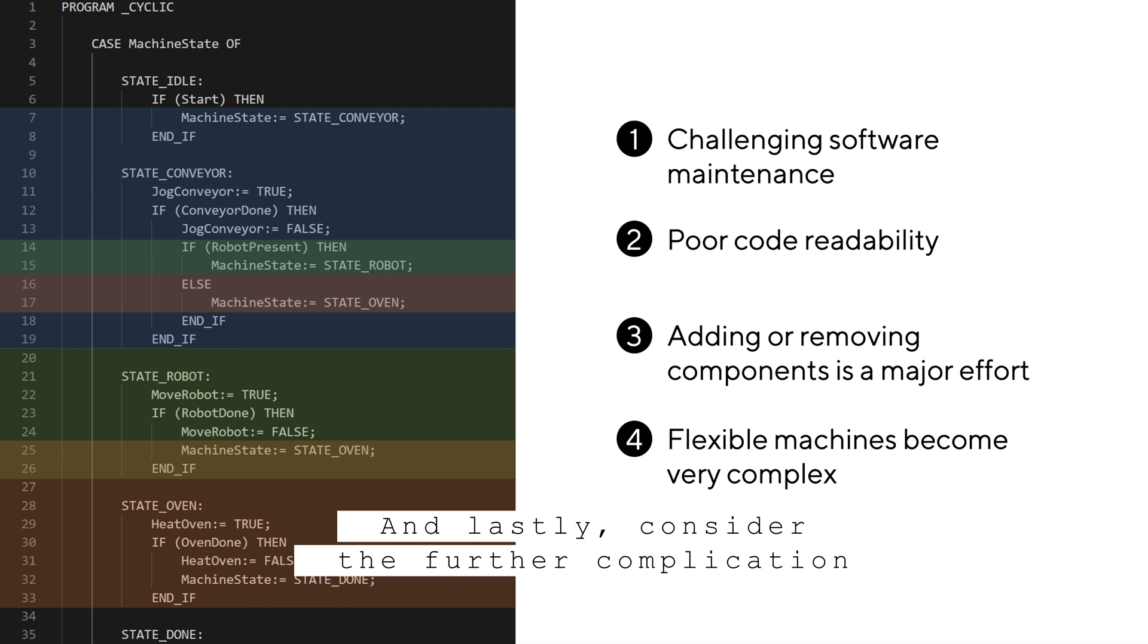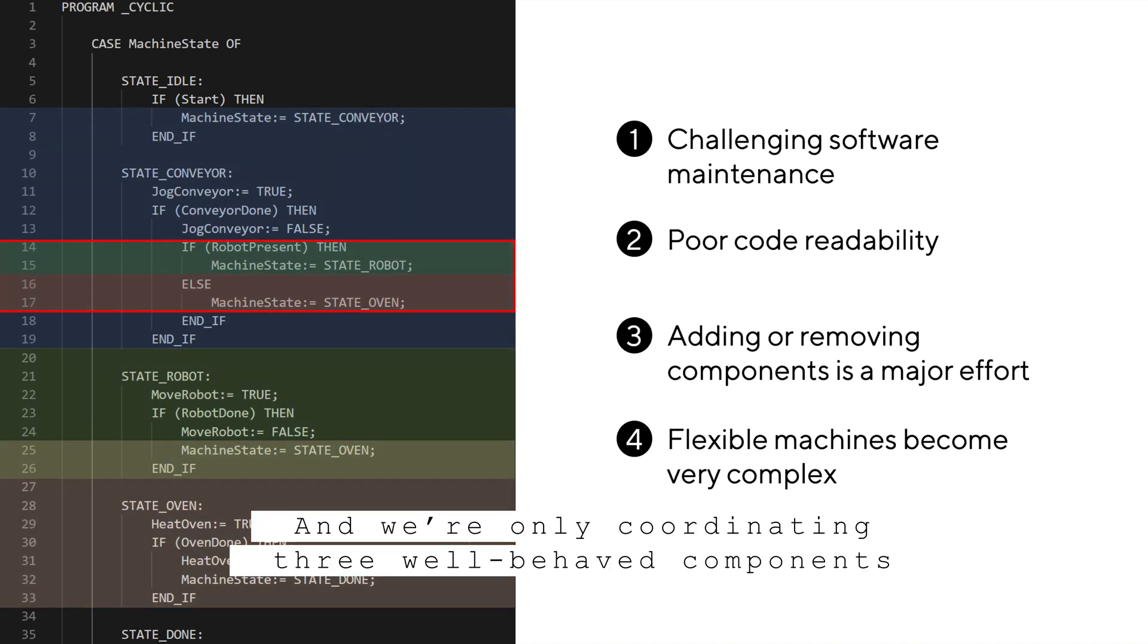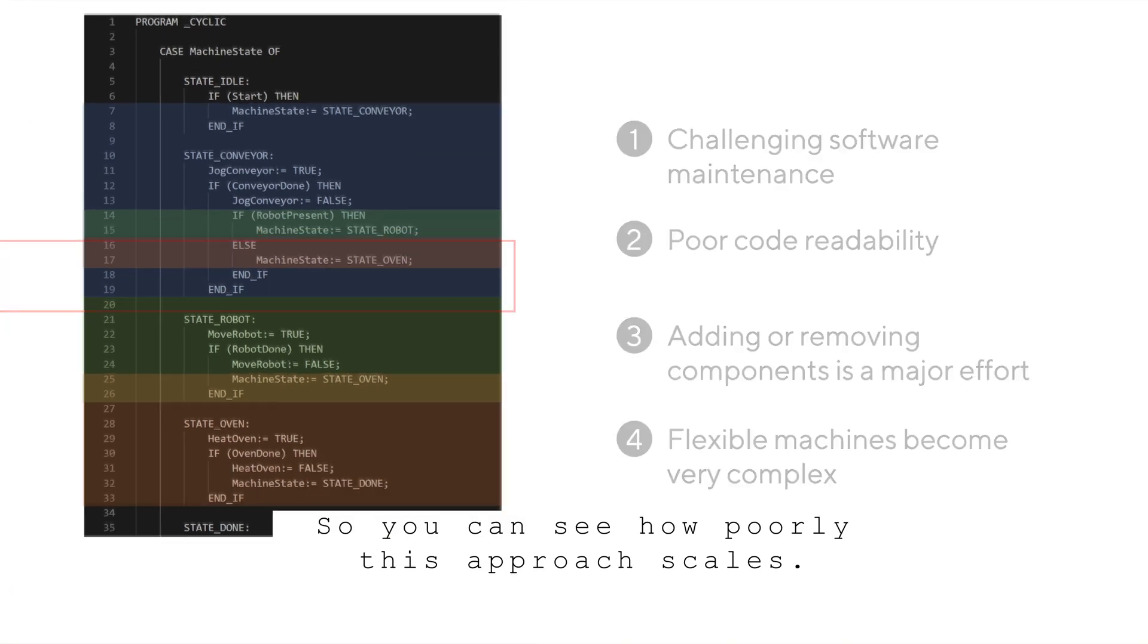And lastly, consider the further complication of making the robot component optional. The conveyor component now must know about two separate possible transitions, with an if statement that checks for presence of the robot component. We're starting to see a lot of undesirable coupling between states, as evidenced by the rainbow pattern that's emerging, and we're only coordinating three well-behaved components, as we haven't even considered error handling logic here. So you can see how poorly this approach scales.